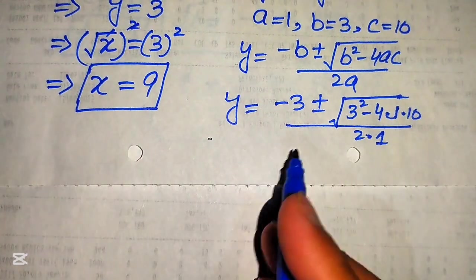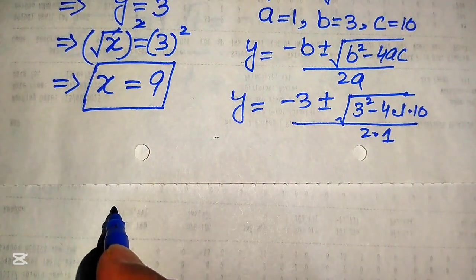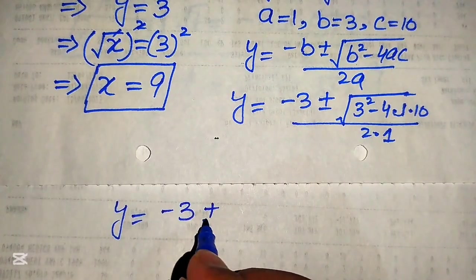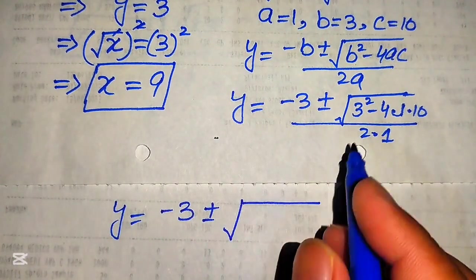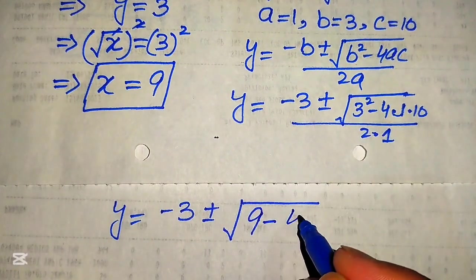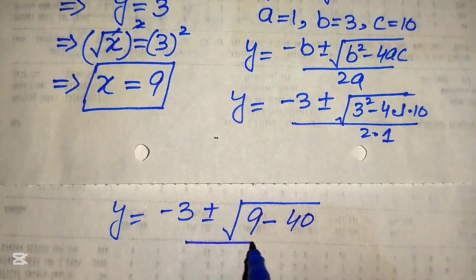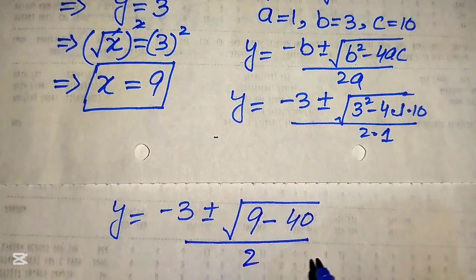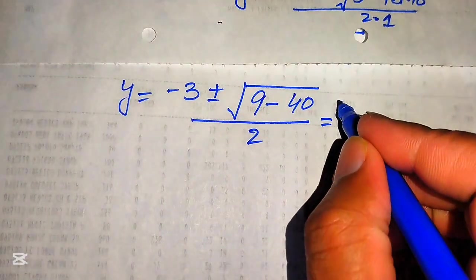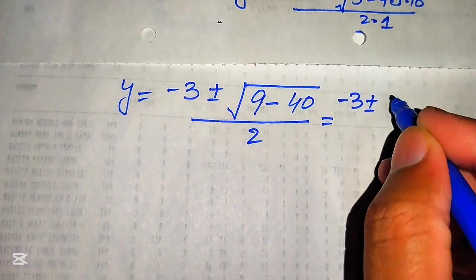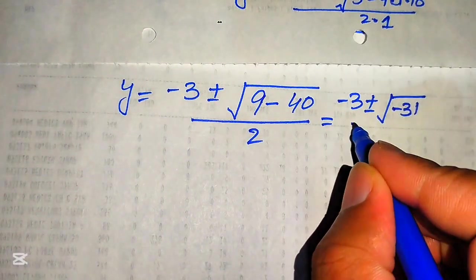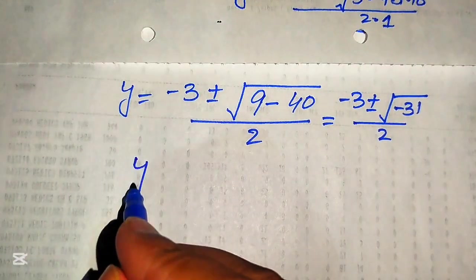Substituting the values: y = (−3 ± √(3² − 4·1·10)) / (2·1) = (−3 ± √(9 − 40)) / 2 = (−3 ± √(−31)) / 2.